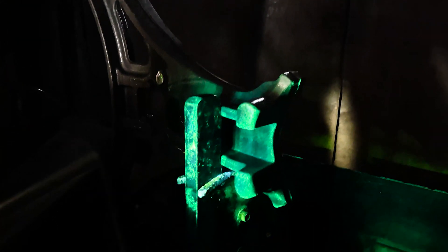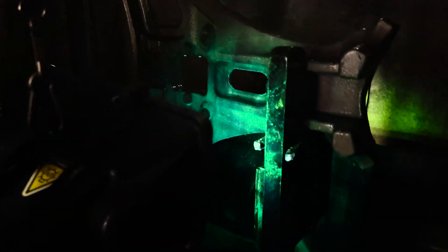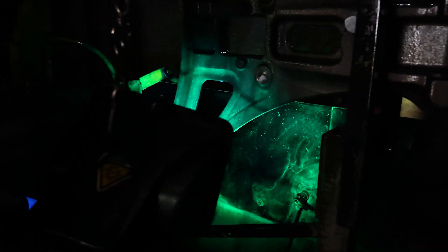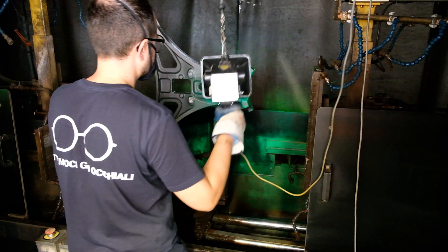After having magnetized the workpiece, it is covered with a water-based liquid with magnetic particles. Within a sufficiently darkened environment, using a UV lamp, it will be possible to highlight any cracks, thanks to the accumulation of the magnetic particles near the crack itself.